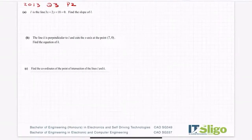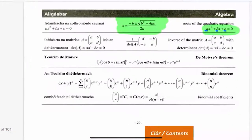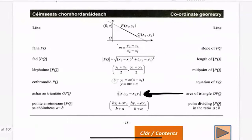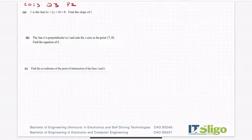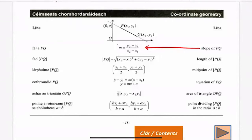Okay, so l is the line 3x plus 2y plus 18 is equal to zero, and it asks you to find the slope. So I'm going to the log tables. Anytime I think of slope, I generally think of the formula m equals y2 minus y1 over x2 minus x1. Now to use that I would need two points, and I don't have any points in this equation, so that formula isn't much good to me for this question.